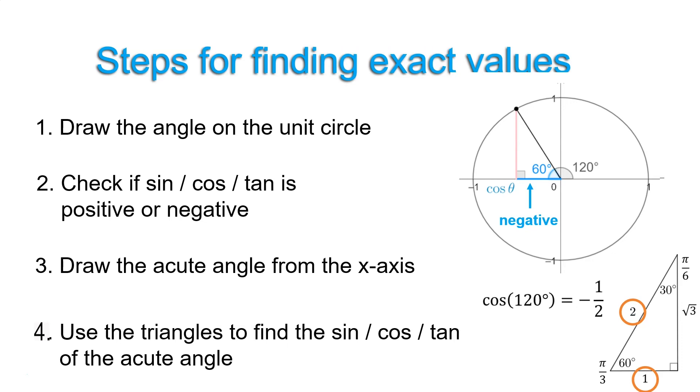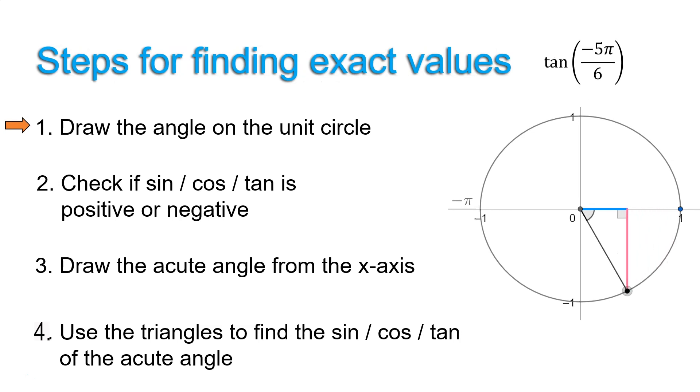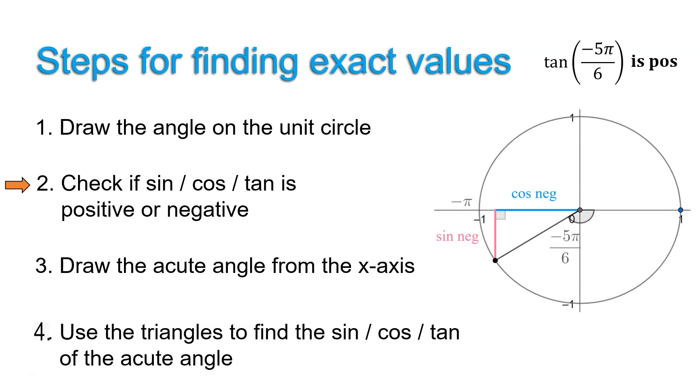So we're going to do one more example, and we'll do one in radians and a negative angle. So tan of negative 5 pi over 6. Step 1, we're going in the negative direction, almost around to negative pi. Remember pi is 180 degrees. But I'm going to actually just talk about this example purely using radians. Now, we can see the tan of this angle is going to be positive, because x and y would both be negative, but sine divided by cosine will be negative divided by a negative, so we're actually going to get a positive. Step 3 is to draw this acute triangle, and this acute angle here must be pi over 6.